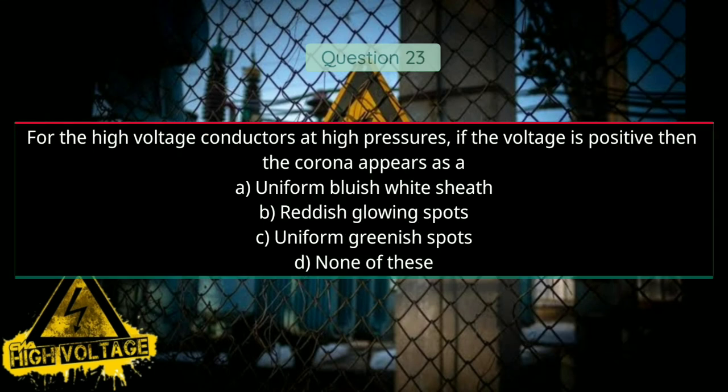Question number twenty-three: For high voltage conductors at high pressures, if the voltage is positive, then the corona appears as a — Option A: uniform bluish-white sheath, Option B: reddish glowing spots, Option C: uniform greenish spots, and Option D: none of these. Answer will be A, uniform bluish-white sheath.